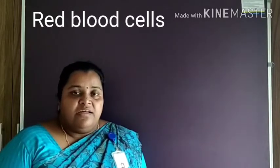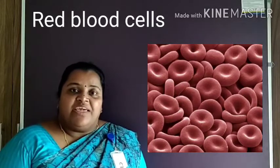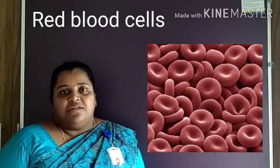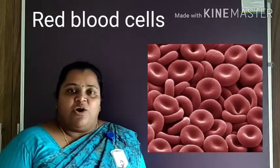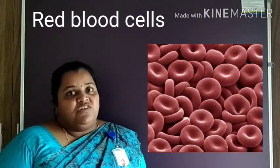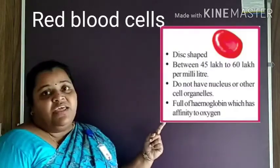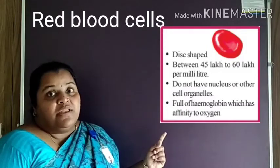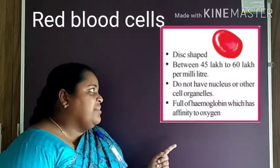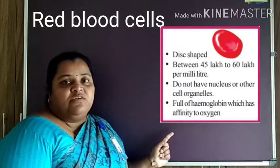The red blood cells are disc-shaped cells, or biconcaved cells — it looks like an Alpha and Libby chocolate. The number varies from 45 lakhs to 60 lakhs. They don't have a nucleus or any other cell organelles. They contain a pigment known as hemoglobin which has more affinity to oxygen.